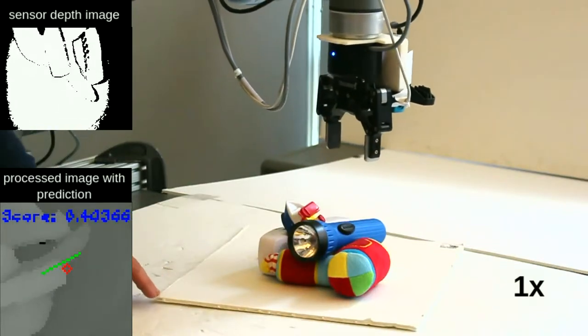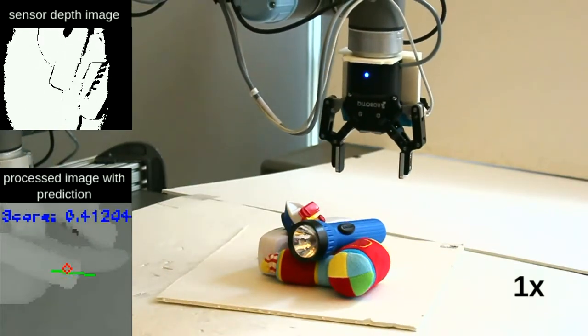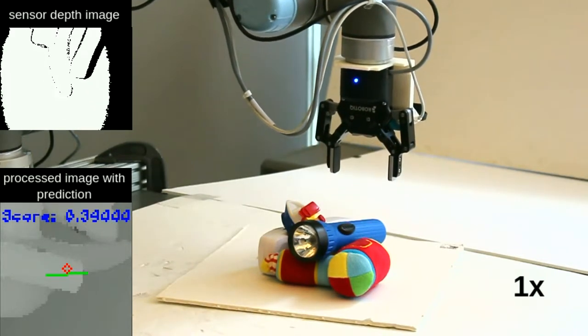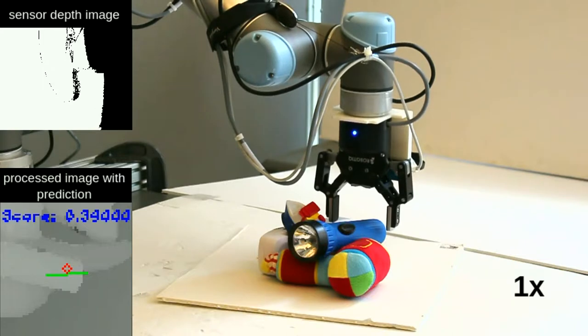The method works well in clutter with unknown objects. The network is trained to grasp using more than 300 different objects placed in a variety of poses and with different amounts of clutter.